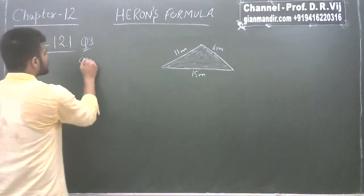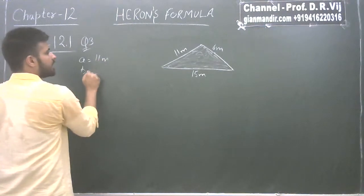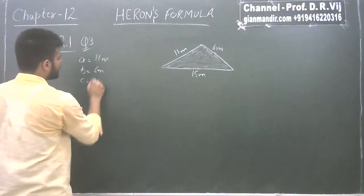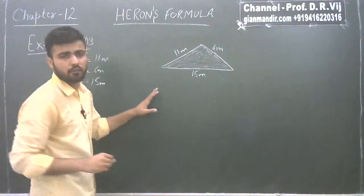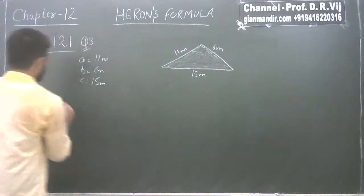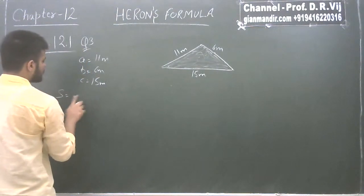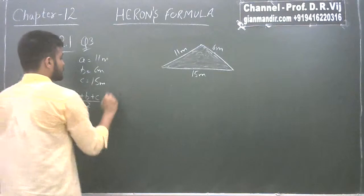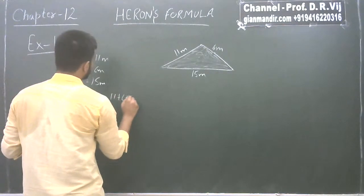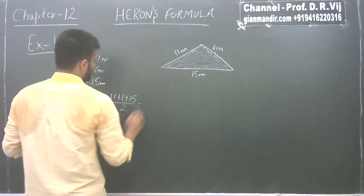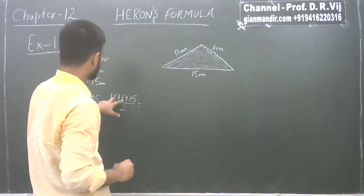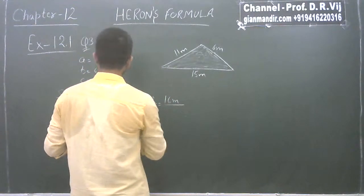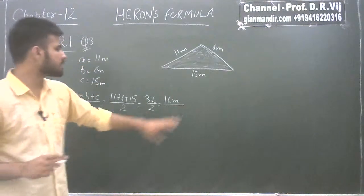So first of all, we take A as 11 meter, B as 6 meter, and C as 15 meter — you can take any assignment of values. First of all, we have to find the value of S for Heron's formula. S is the sum of all sides upon 2, which is (A + B + C) / 2 = (11 + 6 + 15) / 2 = 32 / 2 = 16 meter. So the value of S is 16 meter.